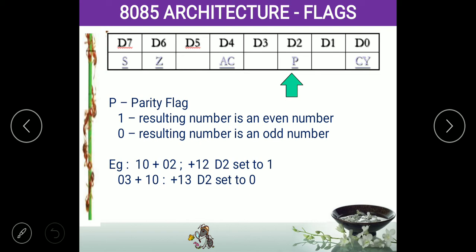Next is the parity flag. As the name implies, it is used to indicate whether the output number is odd or even. If the D2 pin is binary 1 (high), it indicates the result from the processor is an even number. If it is 0, the output is an odd number. This even/odd information can be used by software developers for many purposes — for example, printing only odd or only even pages. This is what we call the parity flag.